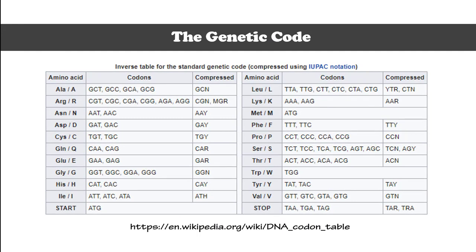Here is a table showing the genetic code. Different codons are going to code for different amino acids. There is some redundancy in the code, which is actually a good thing because mutations do occur. When mutations occur, sometimes there will not be any difference in the outcome of the protein product, which means there will be no difference for the organism having that mutation.